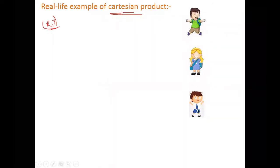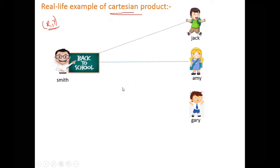Let us consider three students named Jack, Amy, and Gary who study in a school where Smith is the teacher. Smith is connected to Jack, Smith is connected to Amy, and Smith is connected to Gary. So if I find the Cartesian product of this teacher and the students, we will have Smith with Jack, Smith with Amy, and Smith with Gary. These are called ordered pairs, and we have three elements here of the Cartesian product of T and S.